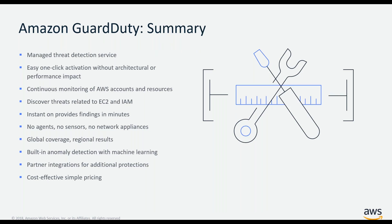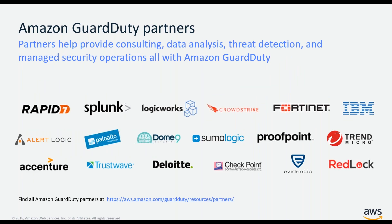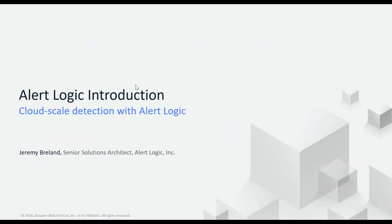To summarize: it's a managed threat detection service that you can enable very quickly and easily with a single button in the console or with a single API call. It has no performance impact because there's nothing running inside your environment — we do everything behind the scenes to identify potentially compromised instances or credentials. Generally, people start seeing findings within their account within minutes of turning the service on. It's also very cost effective with simple pricing and the ability to get the first 30 days of service at no cost. We made it very easy to integrate with third-party tools such as AlertLogic, which is one of our launch partners for the service. We also have a very wide breadth of potential partners out there as well. With that, I'll hand this over to Jeremy to talk about the AlertLogic integration with GuardDuty.